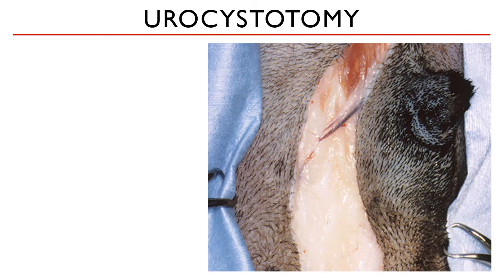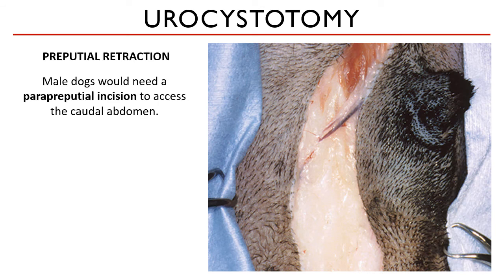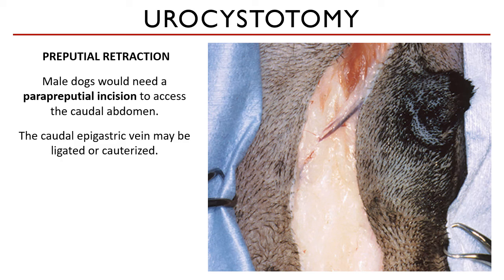When you make a paraprepucial incision, you will encounter a few structures. One of them is the superficial caudal epigastric vein, as you can see in this image. This vessel can be ligated or cauterized. The prepucial muscle is transected at the middle of the muscle belly.